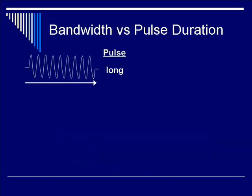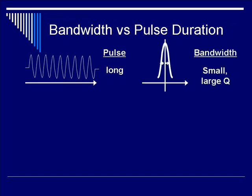Bandwidth versus pulse duration. The pulse shown is characteristic of a long duration, which yields a large Q, small bandwidth, which we talked about earlier is a high ringing recipe.